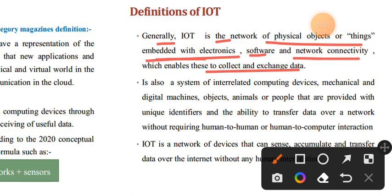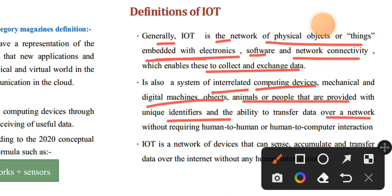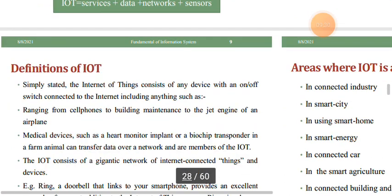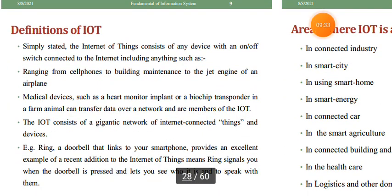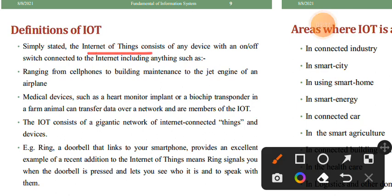The final general definition of IoT: objects or things embedded with electronics — physical objects networked with software, network connectivity, and energy — that collect and exchange data. IoT is also a system of interconnected computing devices, mechanical and digital machines, objects, and human beings provided with unique identifiers and the ability to transfer data over a network. IoT consists of any device with an on or off switch connected to the internet, ranging from cell phones to building maintenance to the jet engines of an airplane.